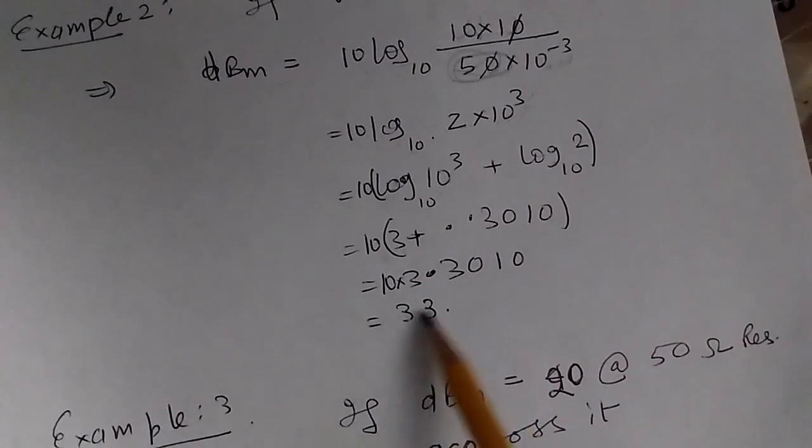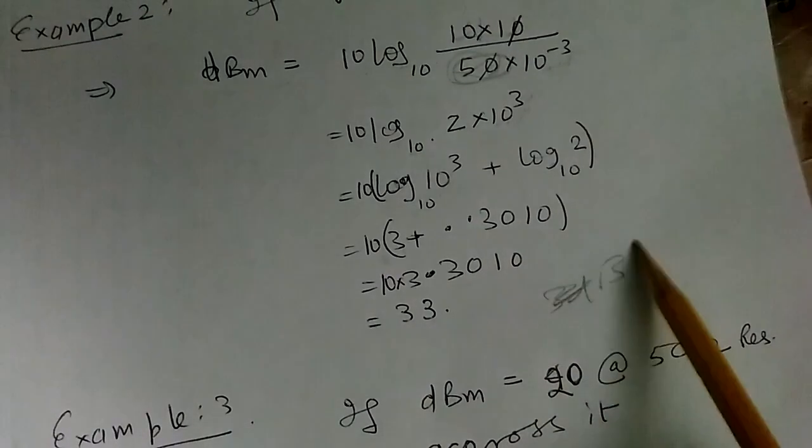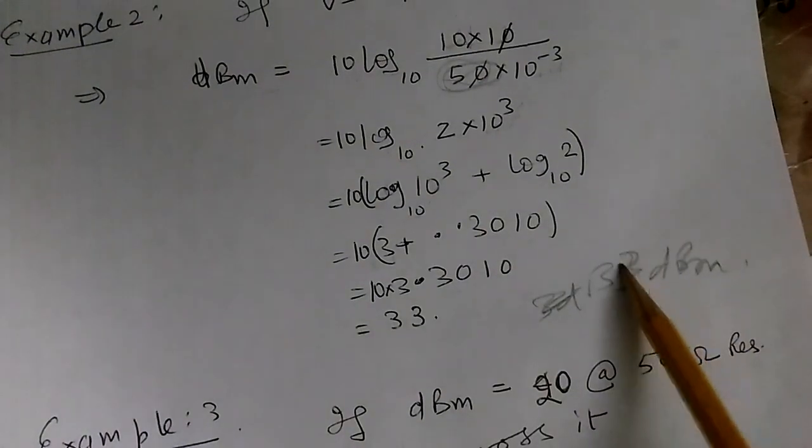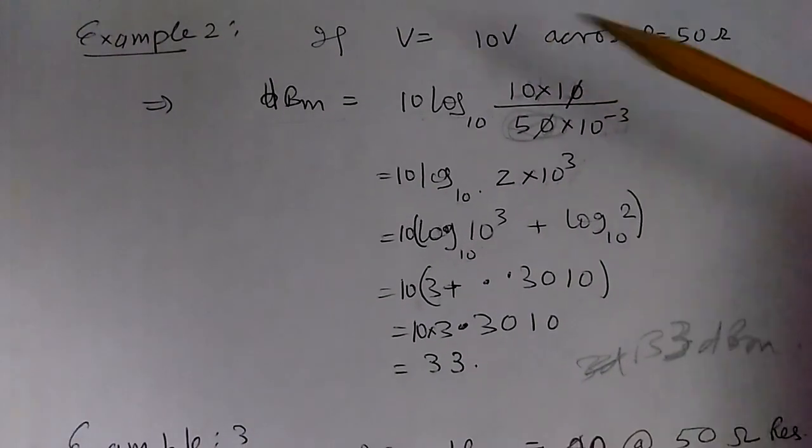So if there is 33 dBm power across, for example, an amplifier, you should think that it has 10 volts across it.